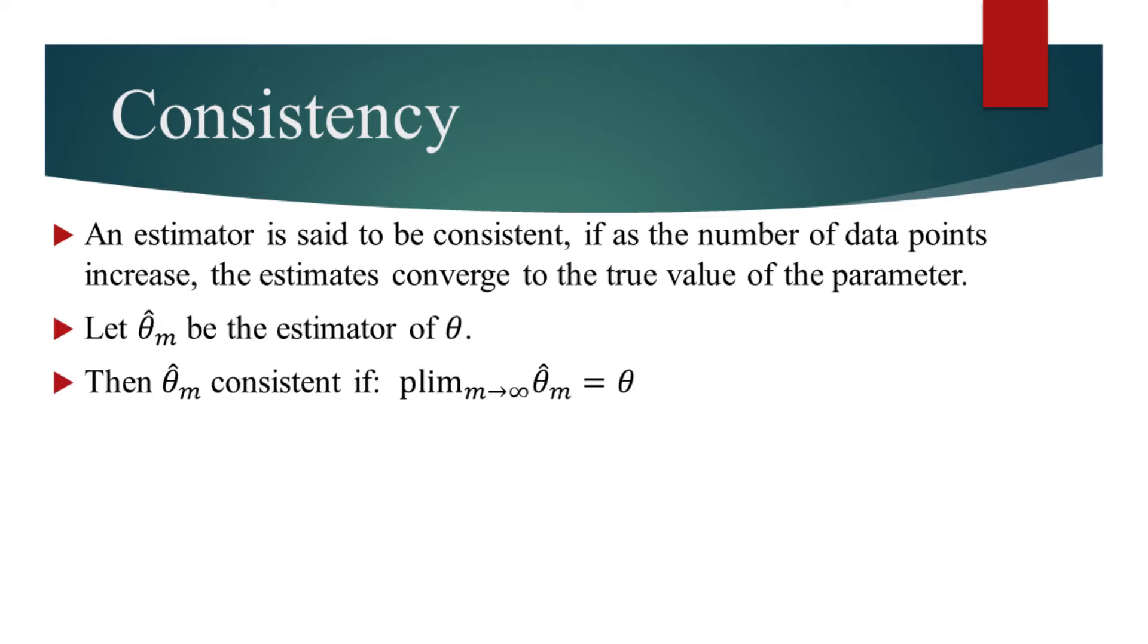Let theta hat be the estimator of theta. Then theta hat is said to be consistent if it satisfies the following condition. P-lim indicates the convergence in probability. Basically for estimators, for any epsilon greater than zero, the probability of the given absolute difference to be greater than epsilon approaches zero as the number of samples M approaches infinity. This is sometimes referred to as weak consistency.